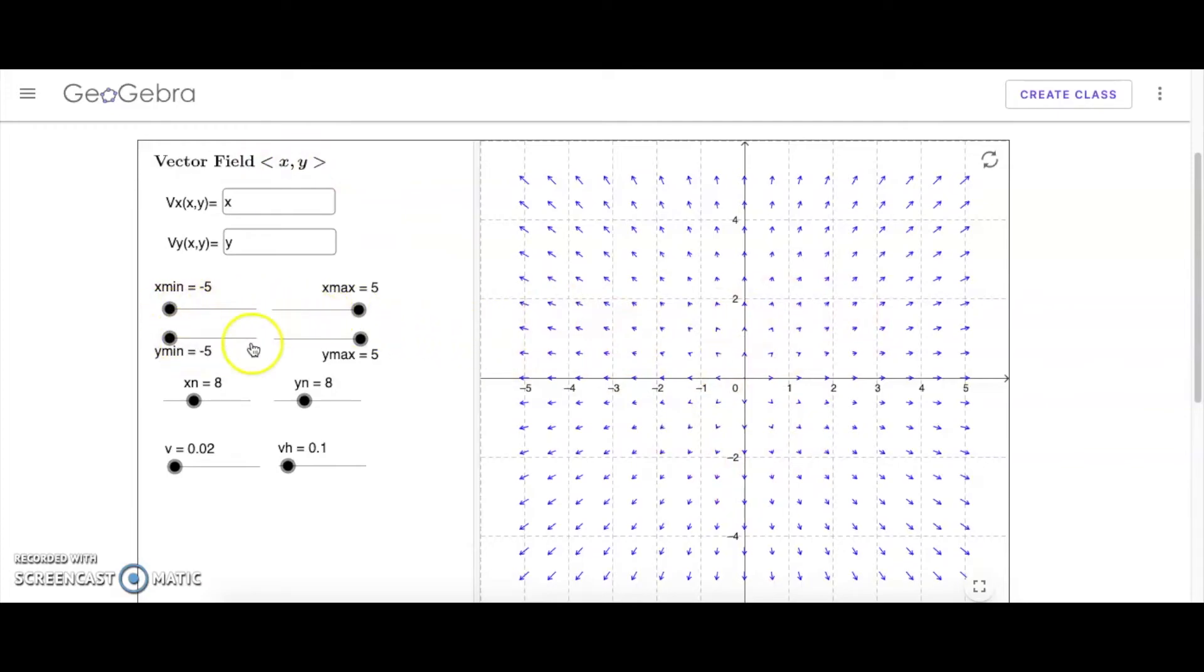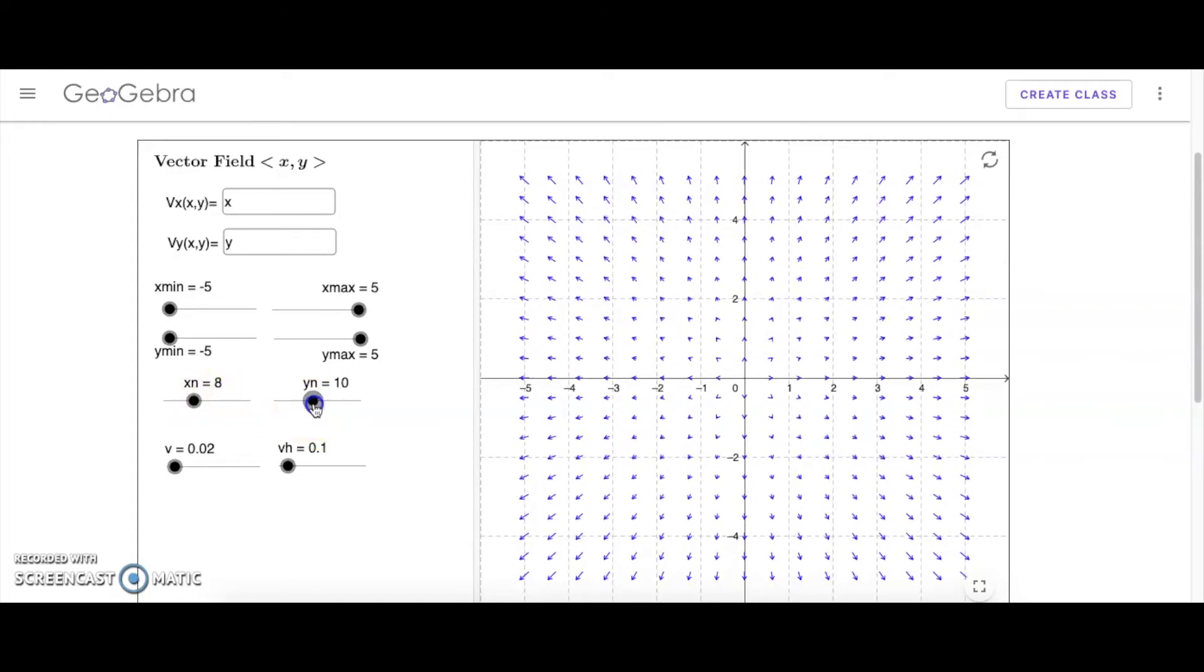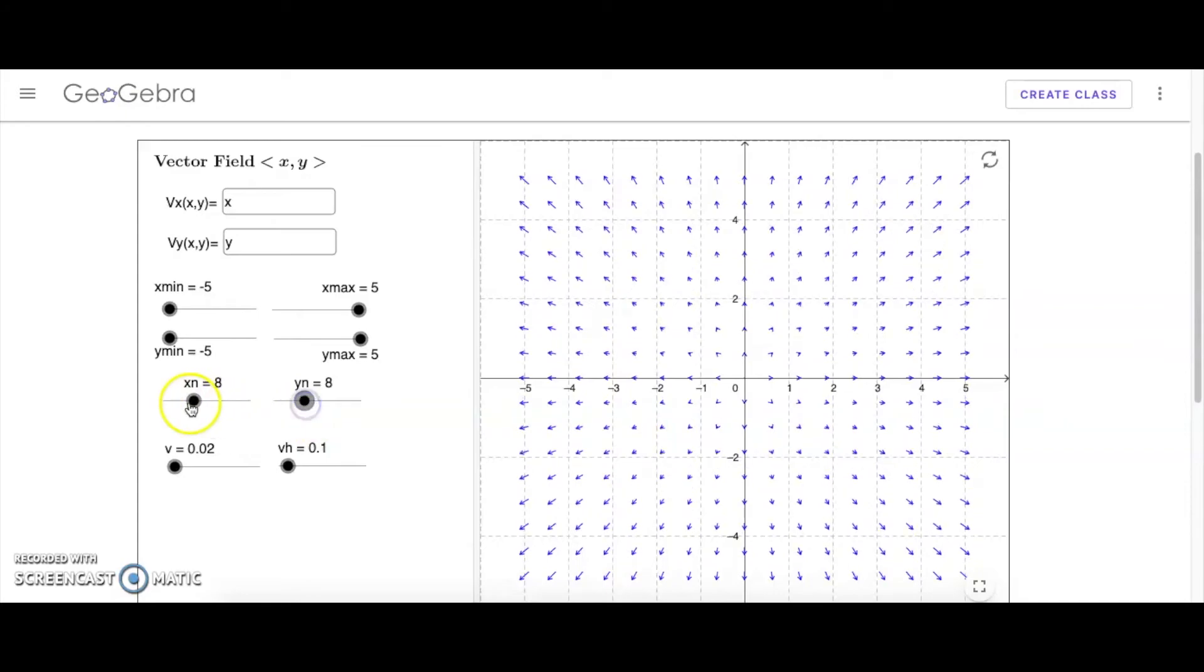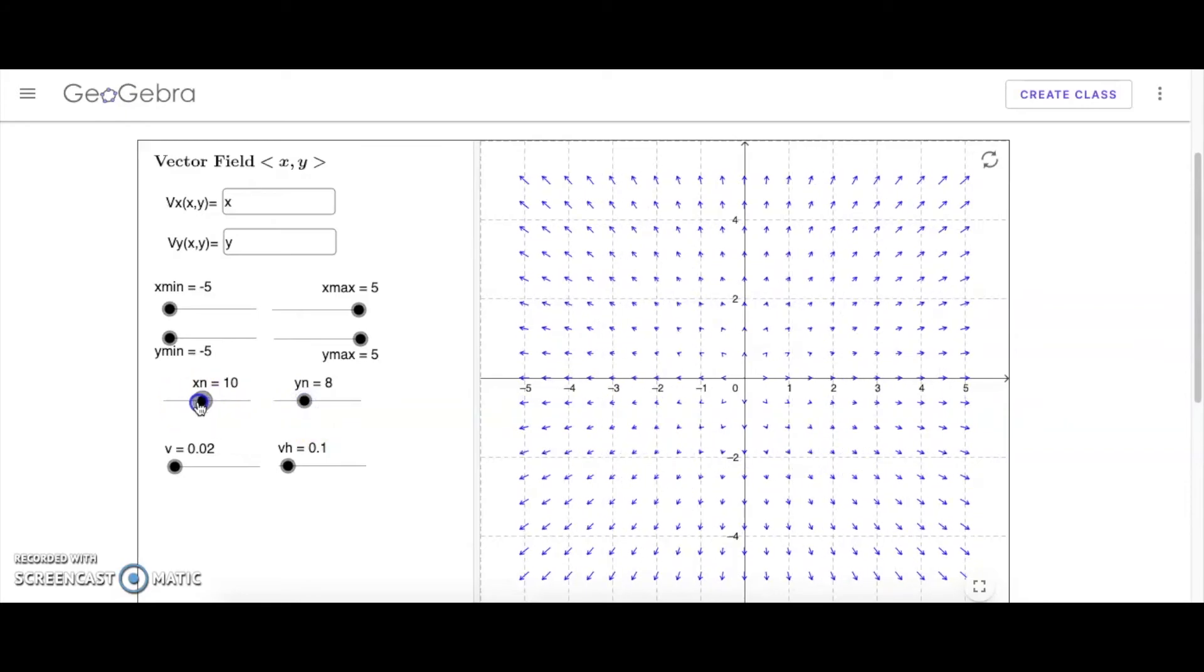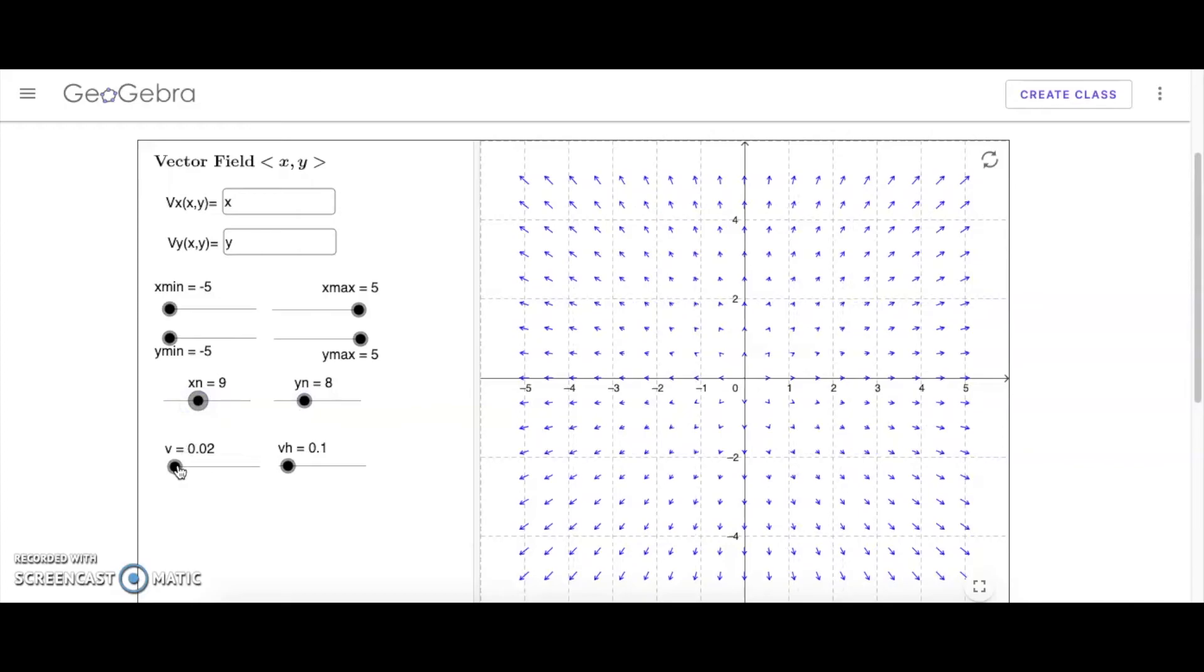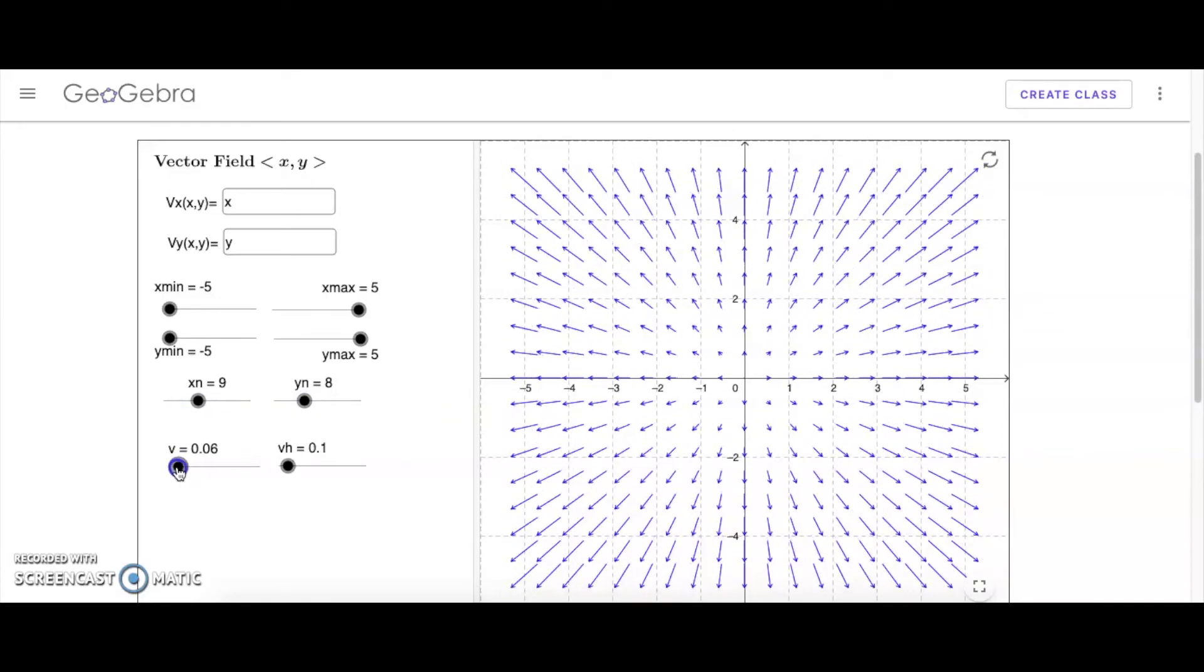You can change the parameters for x and y here. Here you can control basically the size and density of the arrows created by it. So again, we can increase the density in the y direction, increase the density in the x direction, and then here we can make the longest vectors longer. So we rescale the field and here we just make the arrowheads bigger or smaller depending on how many there are. It can tend to overwhelm.